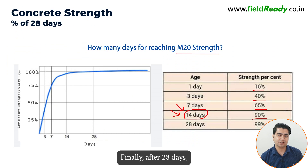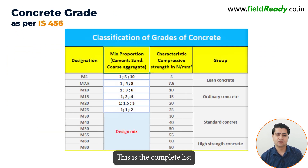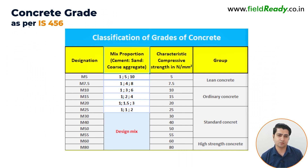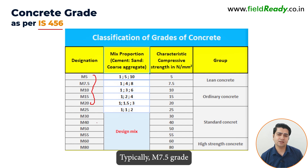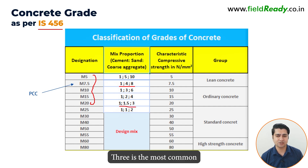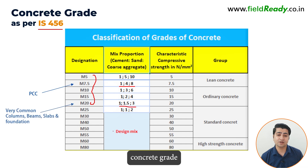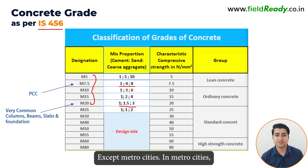Finally, after 28 days, the concrete will achieve an impressive 99% of its strength. This is the complete list of standard concrete grades according to IS-456 code. Grades M5 to M20 are nominal grades, which means they can be mixed locally on site. Typically, M7.5 grade is used for plain cement concrete, i.e. 1:4:8, while M20 grade, i.e. 1:1.5:3, is the most common concrete grade used for beams, columns, slabs, and foundations in India, except metro cities.